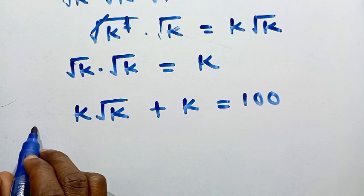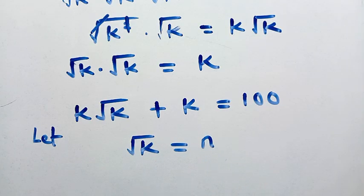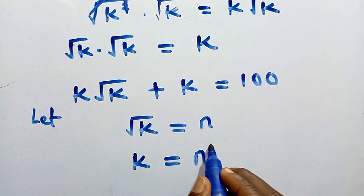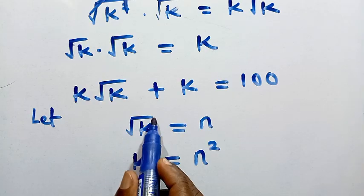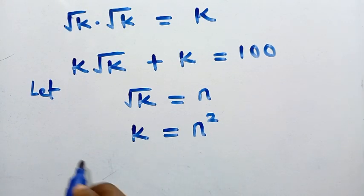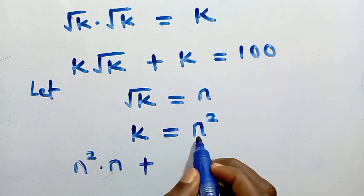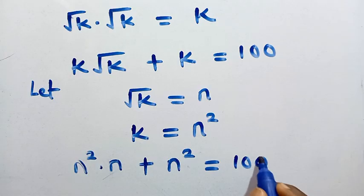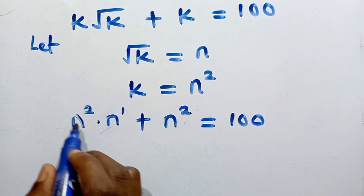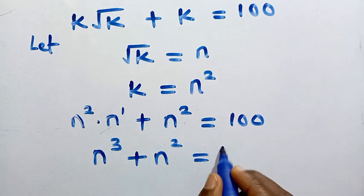After getting to this stage, suppose we let √k = n. Taking the square of both sides, we get k = n². Replacing in our equation: n² × n + n² = 100. Using the product of indices rule, n² × n = n³. So the equation becomes n³ + n² = 100. This is a cubic equation and we need values that satisfy it.